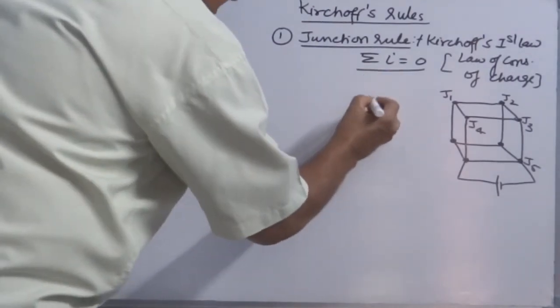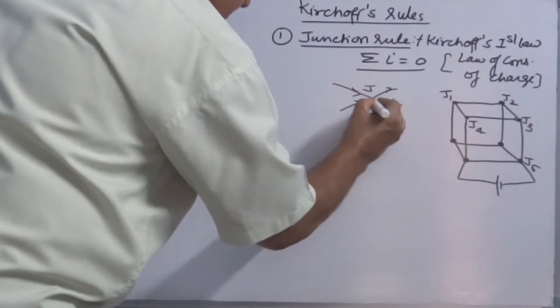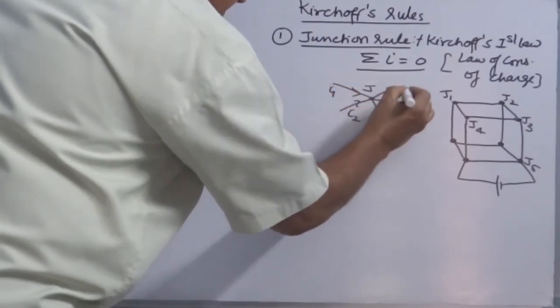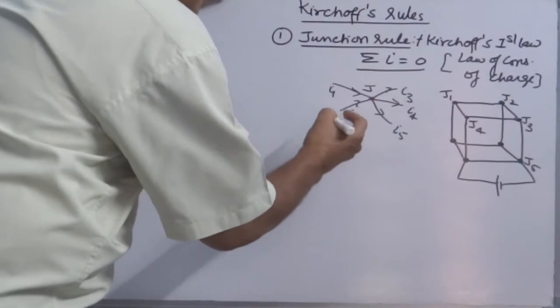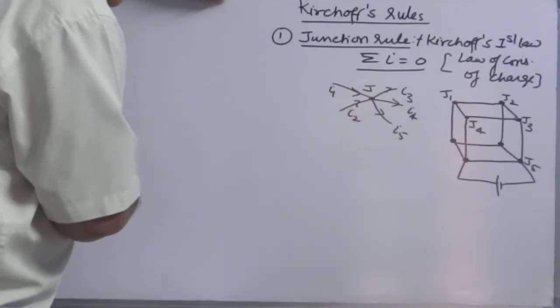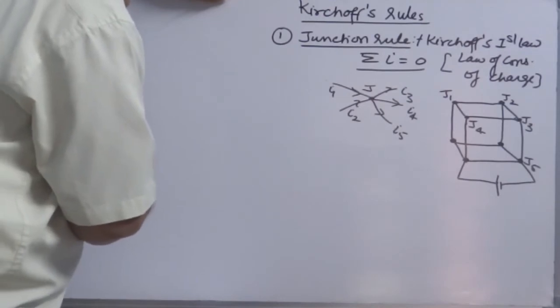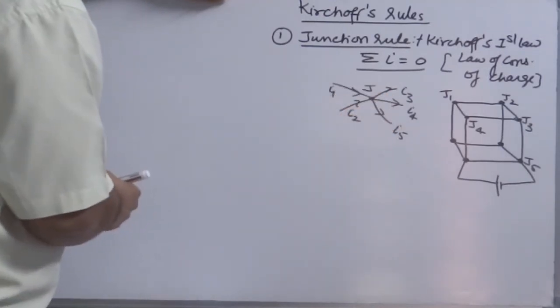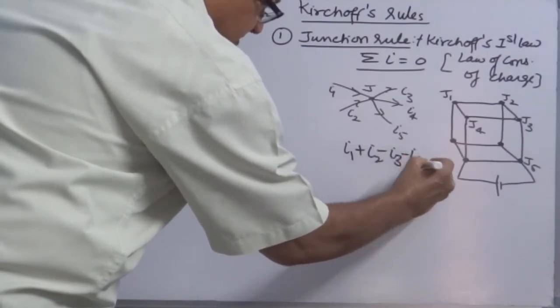Now how do you apply this? Sign convention: suppose this is Junction J, and there are so many connections and so many paths through which current is coming or leaving the junction. I have shown you here in the figure at Junction J, currents I1, I2 enter the junction; I3, I4, I5 leave out of the junction. When you apply junction rule, the current approaching the junction is taken as positive, and the current leaving out of the junction is taken as negative. So I1 plus I2 minus I3 minus I4 minus I5 equals to 0.